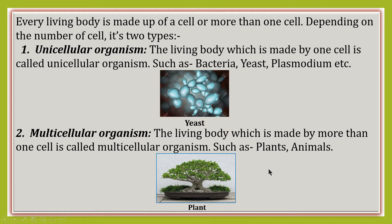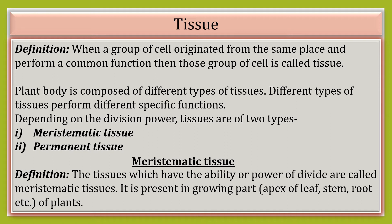This group of cells is called tissue. The definition of tissue: when a group of cells originated from the same place and perform a common function, then those groups of cells are called tissue. Plant body is composed of different types of tissues, and different types of tissues perform different specific functions.